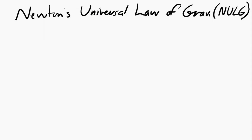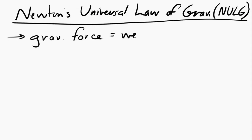Let's look at Newton's Universal Law of Gravitation. So we've already looked at gravitational force. We call it the weight, and we have an equation for it. Fg is equal to mg, where g is equal to 9.8 meters per second squared downward.